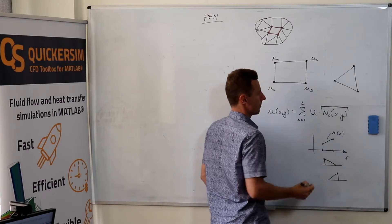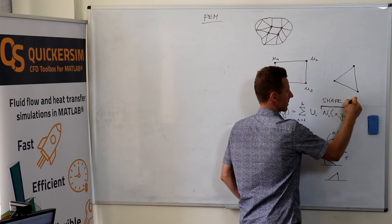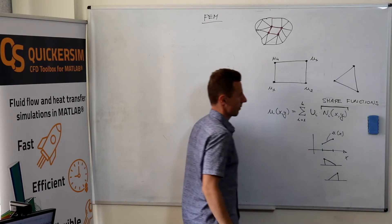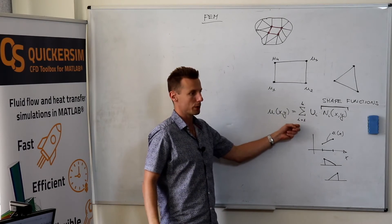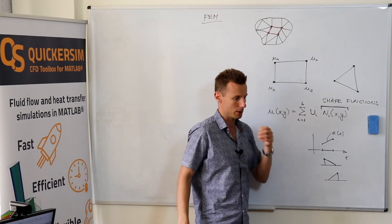How is this called? Shape functions. These are the shape functions. These are the values at the nodes. We already know how the field approximation is built.